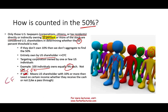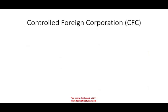If it is not a Controlled Foreign Corporation, then we don't have to worry about anything. But if it is a CFC, then shareholders owning 10% or more are taxed on certain income whether they receive the cash or not. It's basically like a pass-through entity such as a partnership or an S corporation. You cannot shelter that money because you are part of a controlled foreign corporation and you own more than 10% as part of the 50% ownership.